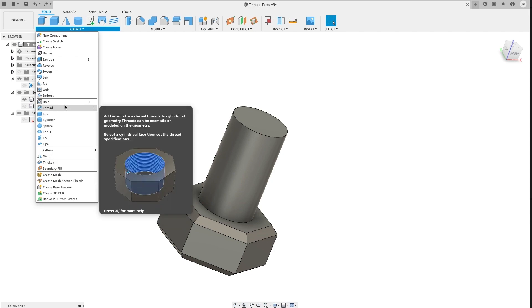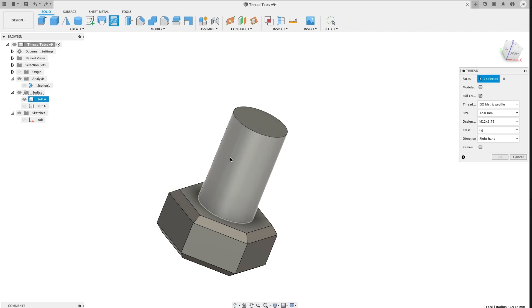So instead, let's pull up the thread tool and select the first surface that we want to thread. This puts a weird texture on our part, but it isn't actually changing the shape of the surface. To do that, we need to check modeled.